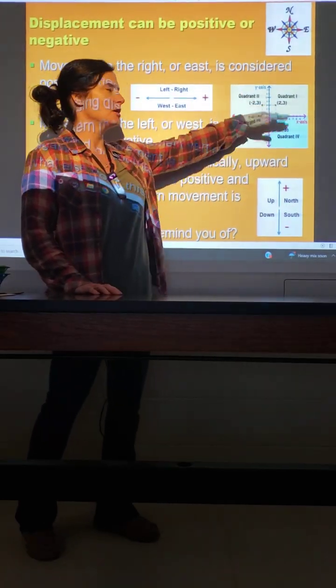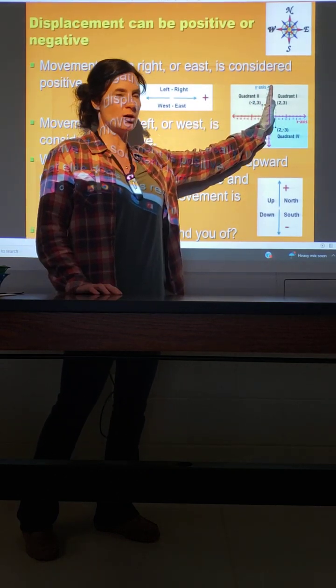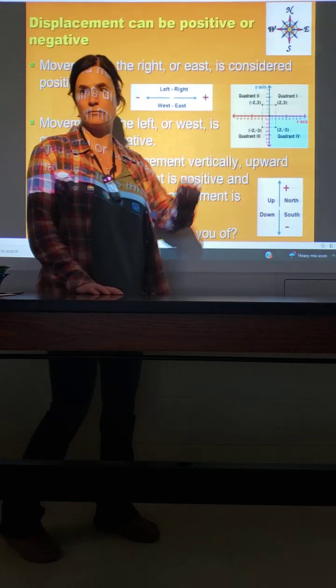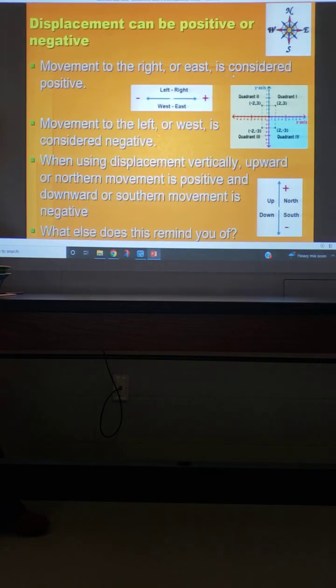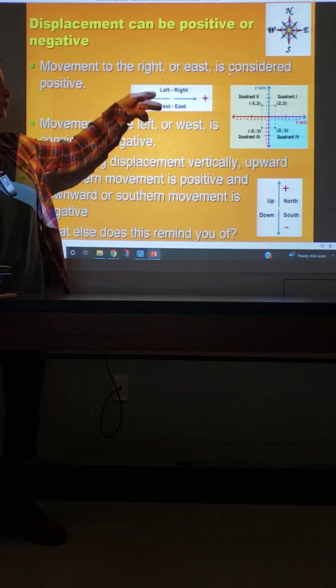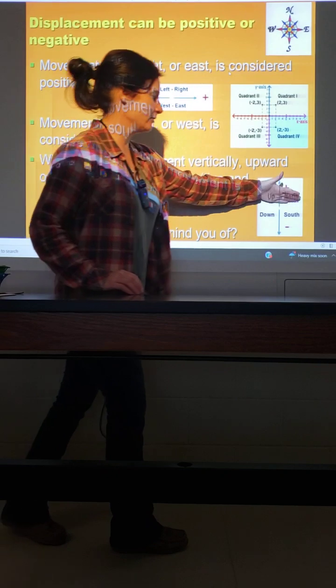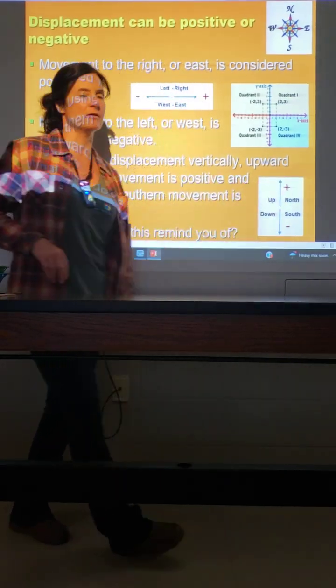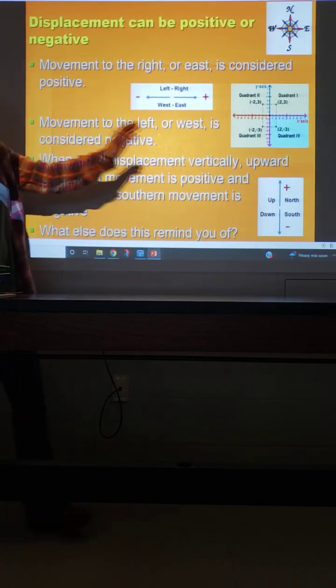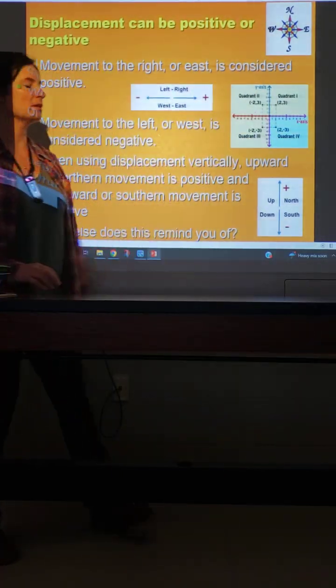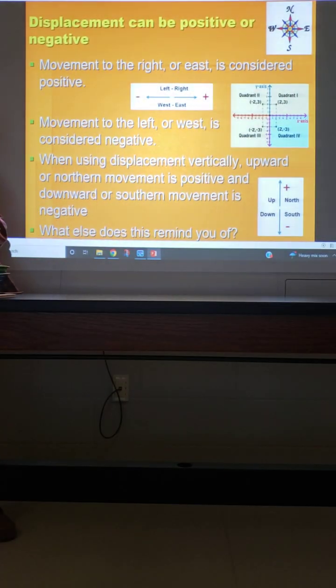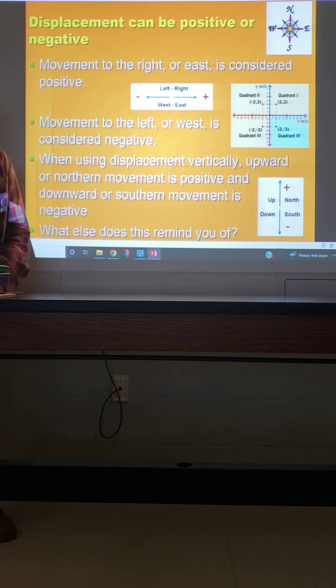And that follows looking at our x axis and our y axis on a coordinate plane system. And then kind of the opposite is true. Left and west. Down and south, if you're going south of the x axis or to the left or west of the y axis is representing a negative type value.